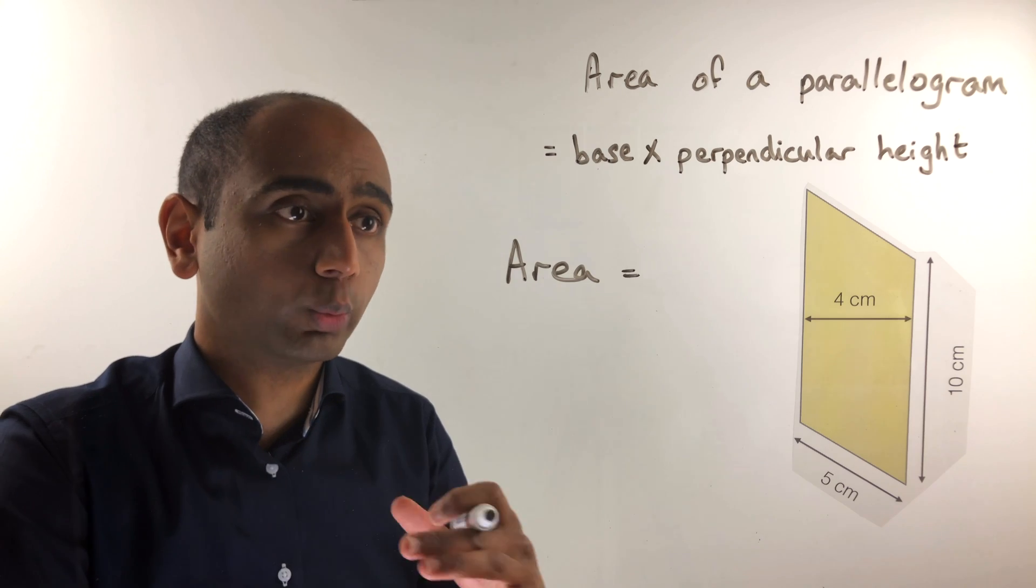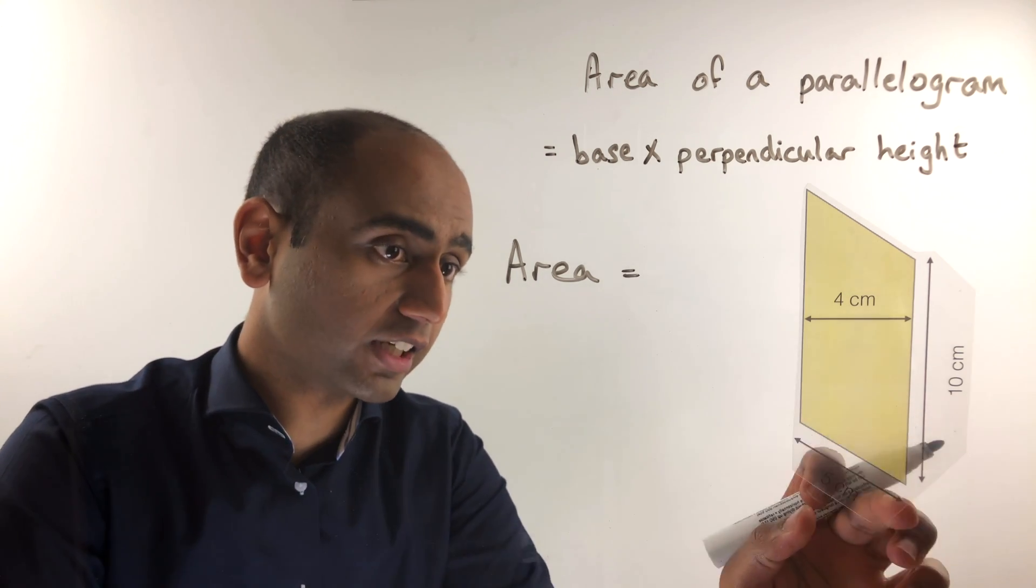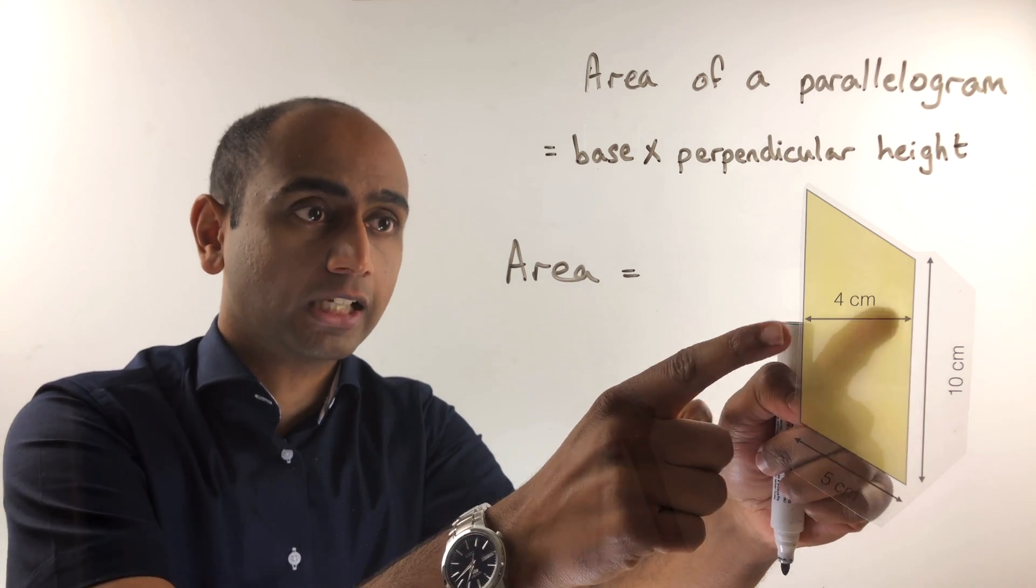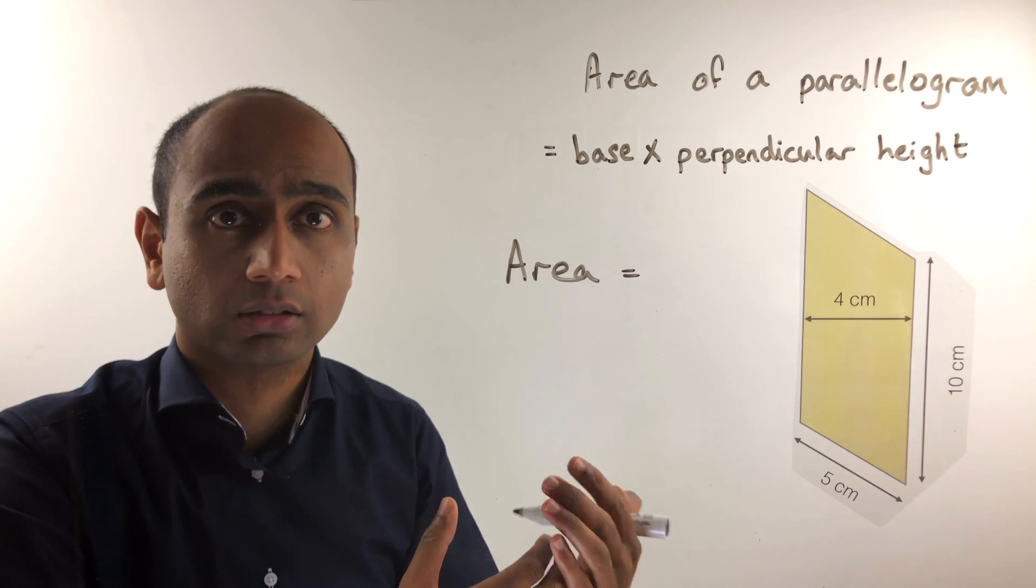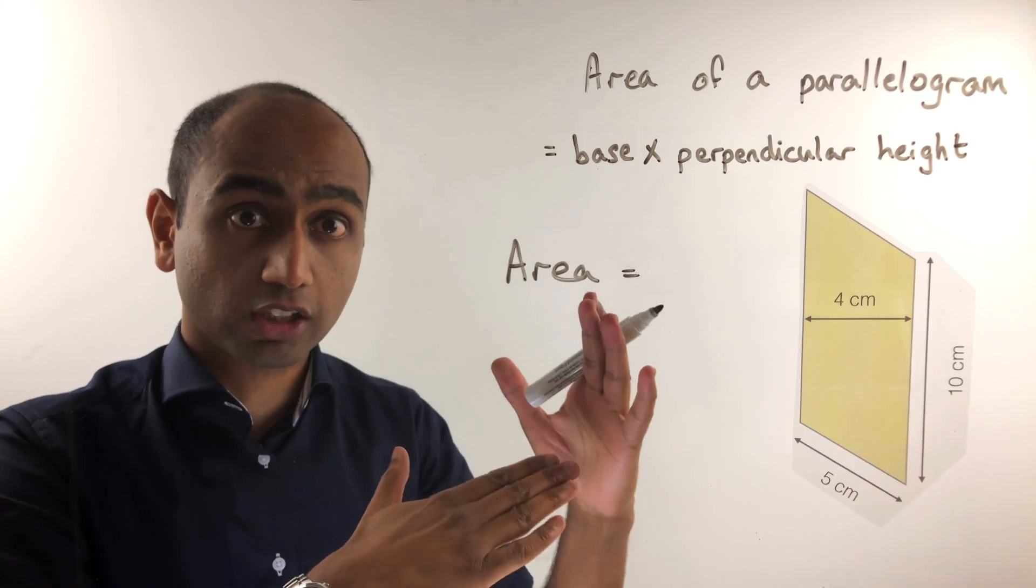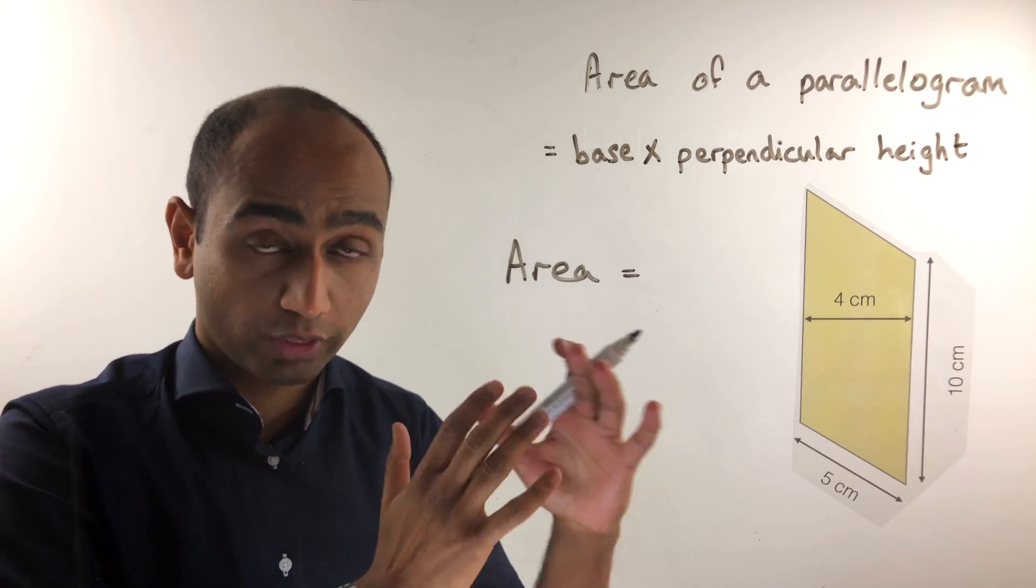In this example we have a parallelogram where this side is 5 centimetres, this side is 10 centimetres, and we have a distance here of 4 centimetres. First of all don't be tempted to do 10 times 5. Those are not perpendicular to each other, so that's not how we go.